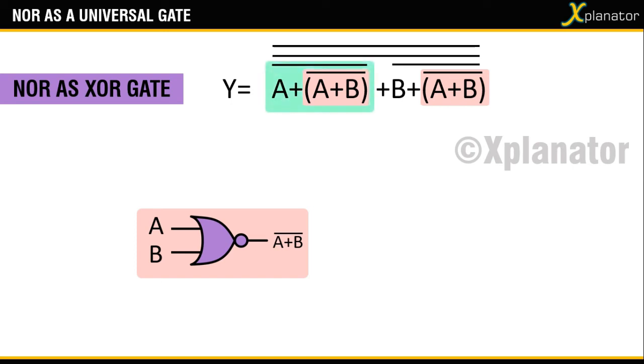Next, to draw the part of the equation which is shown in green, you need the input A and the second input will be the output from the first gate. So draw another NOR gate and connect the inputs. The output will be as shown.